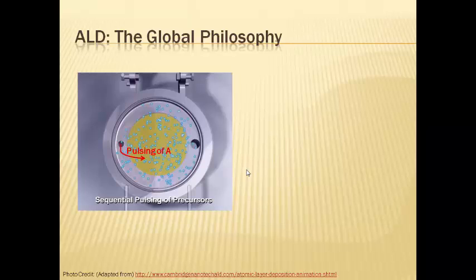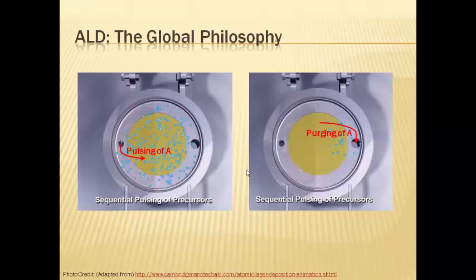As this picture depicts, precursor A shoots out of the left opening and streams across the yellow substrate. This precursor reacts with the substrate and products are formed. The excess precursor and the reaction side products are pumped out of the reaction chamber to the opening on the right.